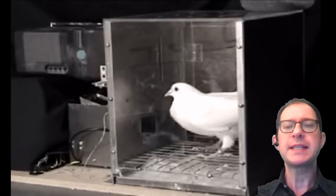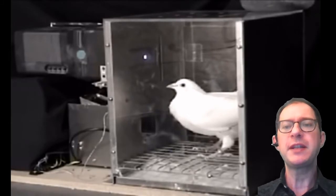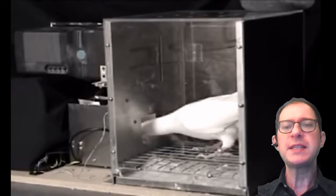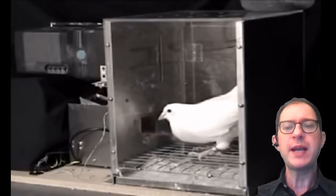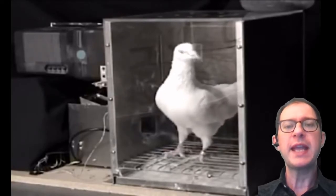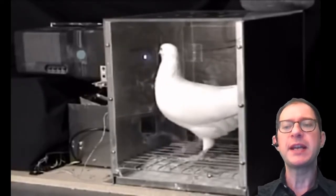In this video we see an example of sign tracking in pigeons. In this experiment food is delivered in the magazine at the bottom after a small white square is shown on the screen. So this is a Pavlovian procedure with a white square as CS and food as the US. What we are looking at is a pigeon that has already experienced the CS-US pairing a number of times.